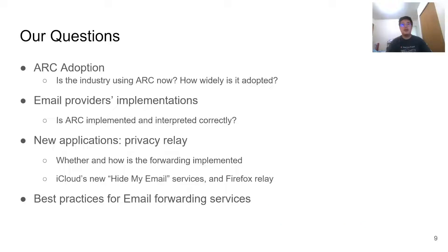So with ARC in mind, here are the questions we are interested in. How many services and senders in general have adopted ARC? How did those who adopted ARC implement it and interpret the information it provides? Moreover, we looked into the new privacy-preserving relay services to see if these forwarding services are in any way different from traditional use cases and if there are new security issues. In the end, we proposed configurations for email forwarding services that balance security and delivery rate.